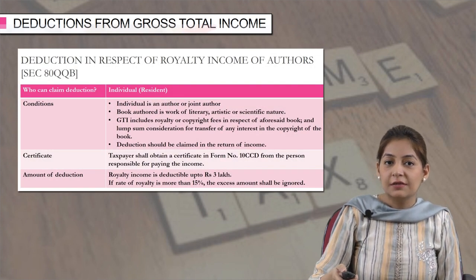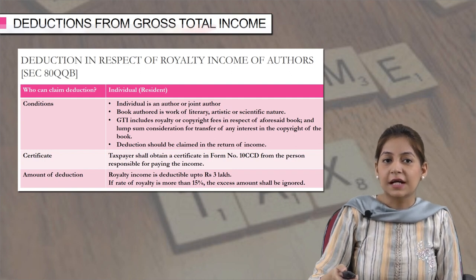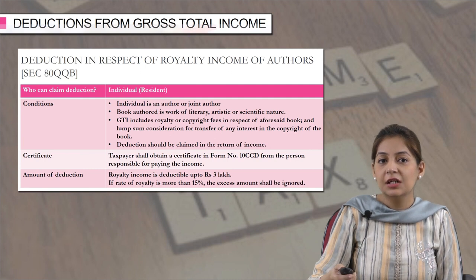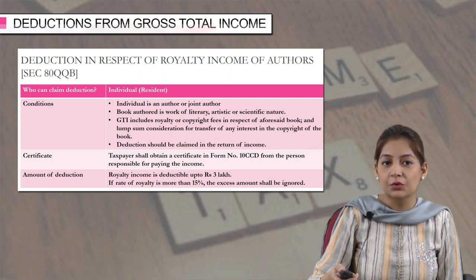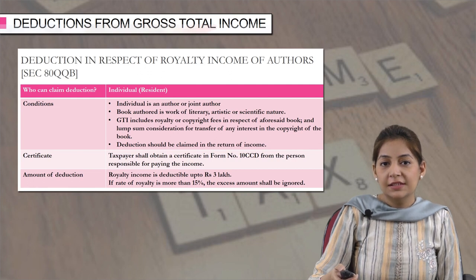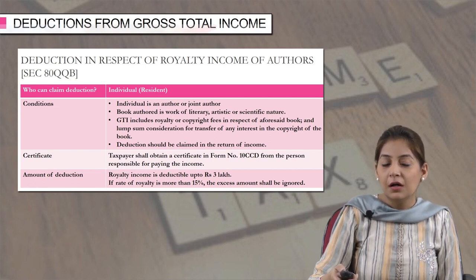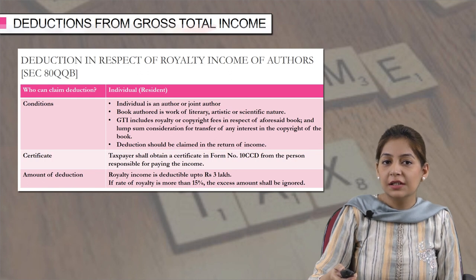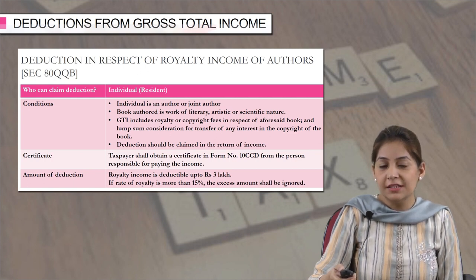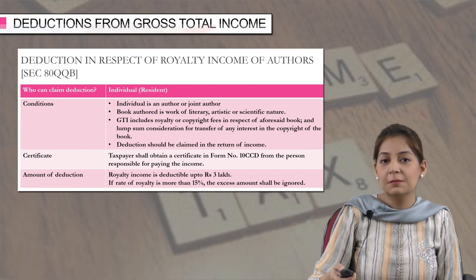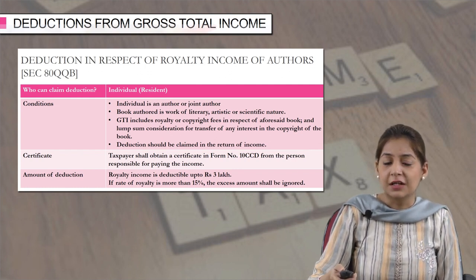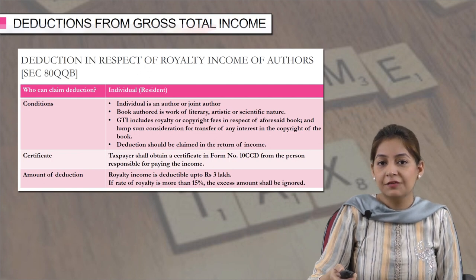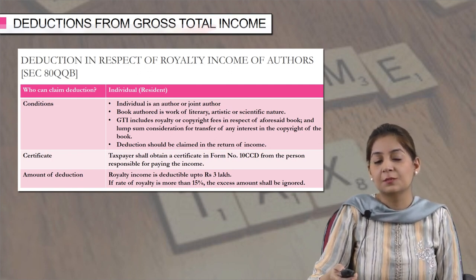Next comes the deduction in respect of royalty income of authors, that is section 80QQB. Only a resident individual can claim the deduction. The conditions are: number 1, the individual is an author or joint author of a book which is of a literary, artistic, or scientific nature; number 2, his gross total income includes royalty or copyright fees in respect of that book and lump sum consideration for transfer of any interest in the copyright; and the deduction should be claimed in the return of income. He also has to obtain a certificate in form number 10CCD from the person responsible for paying the income.